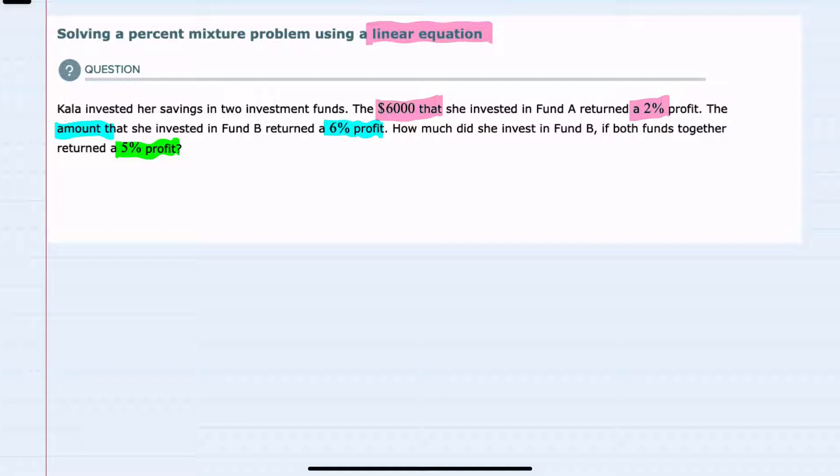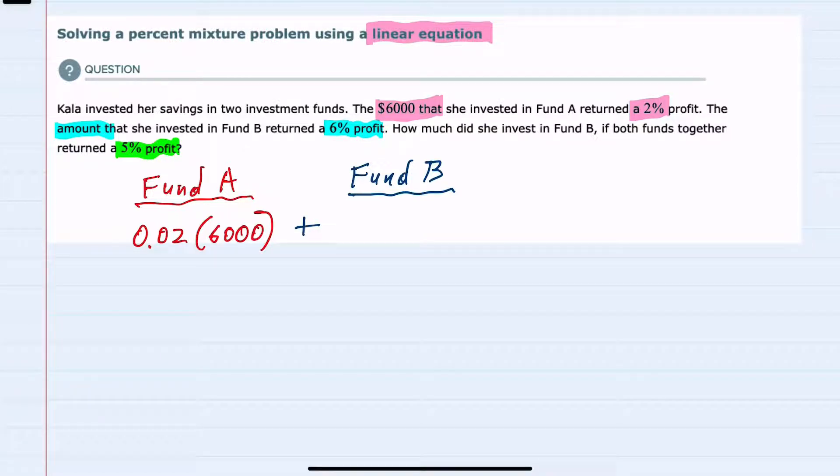So to set up our linear equation, I'm going to start with Fund A's interest. We know that she invests $6,000 and she makes a 2% profit. So her interest here will be 0.02, that's our 2% times the amount she invested, $6,000. And then if we add to that the interest that she makes from Fund B,